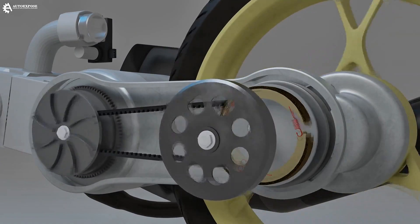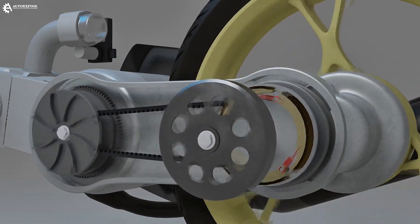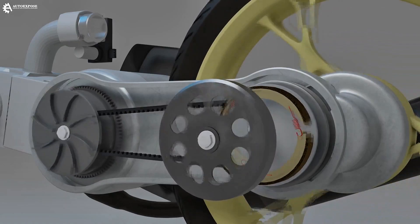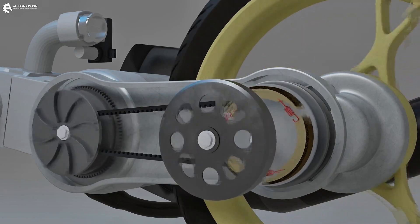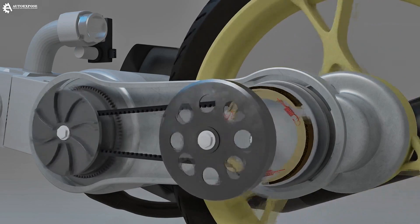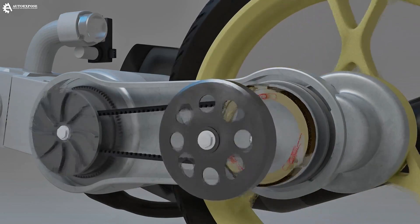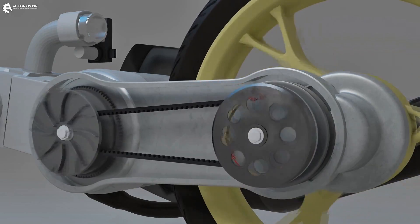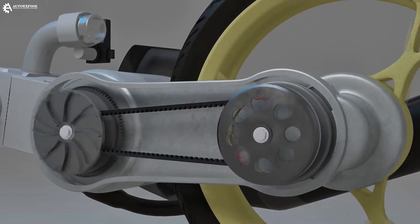No matter how fast the clutch disc turns, if the inner lining is still turning slowly, it won't engage. So, what if we increase the engine RPM slightly, to allow the clutch lining to expand? This is one of the engine braking techniques on automatic motorcycles.